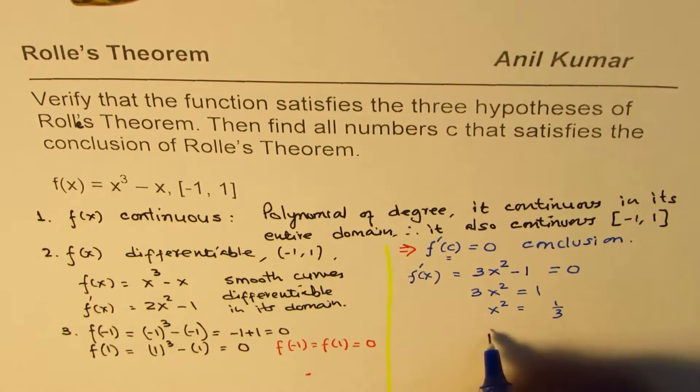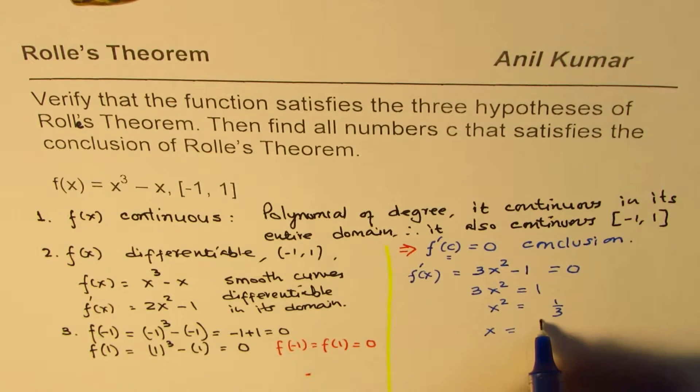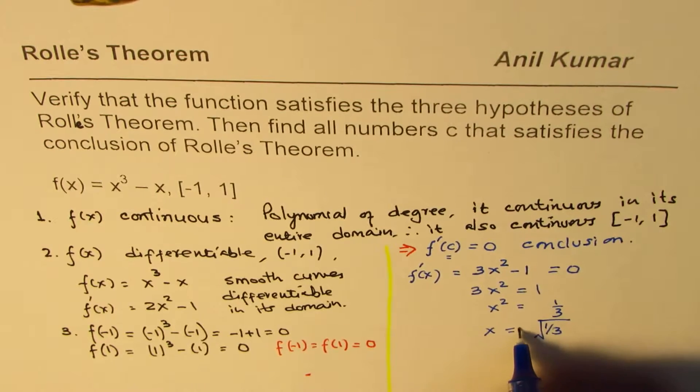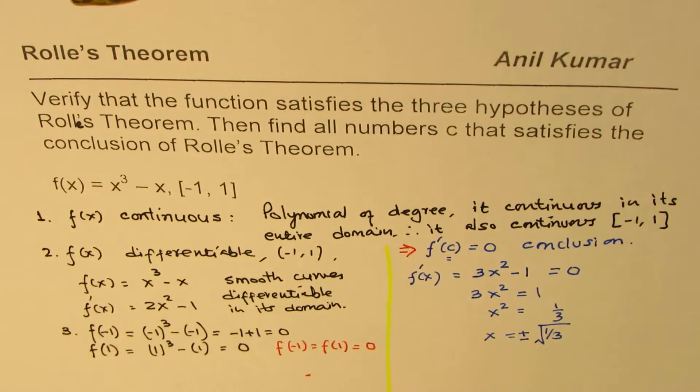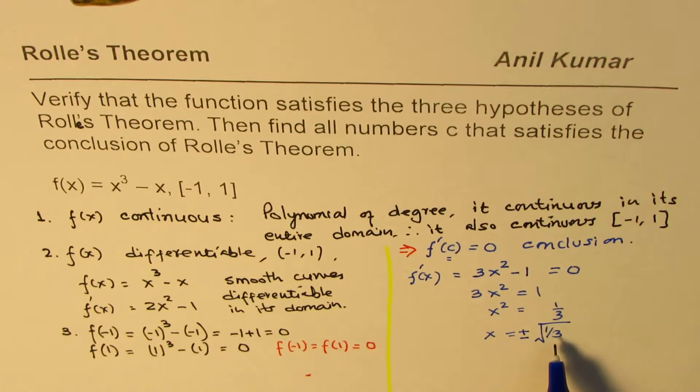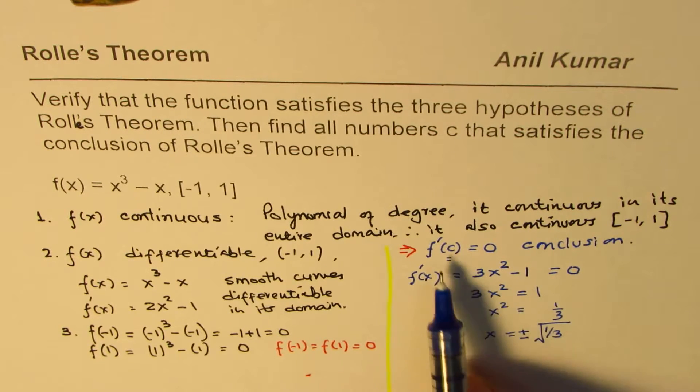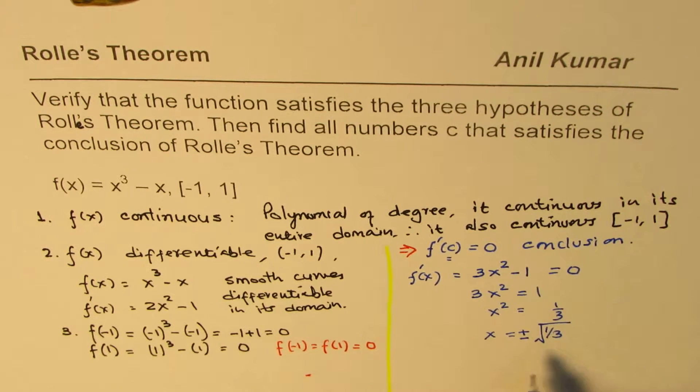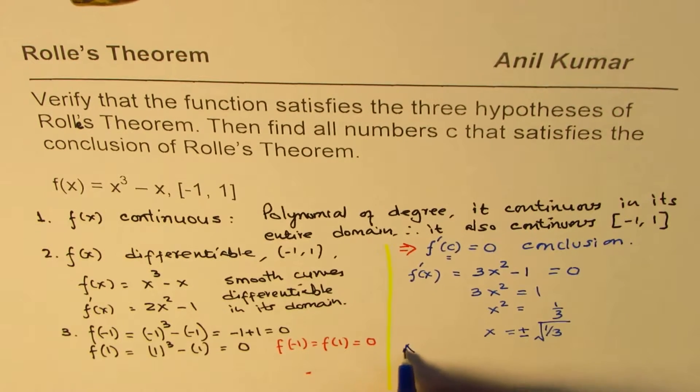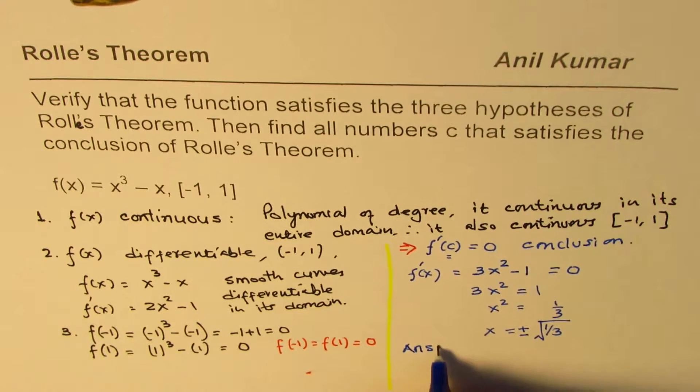Or x = √(1/3), and whenever you do square root you know we have positive and negative values. So these are the two values at which the derivative of this function is 0.